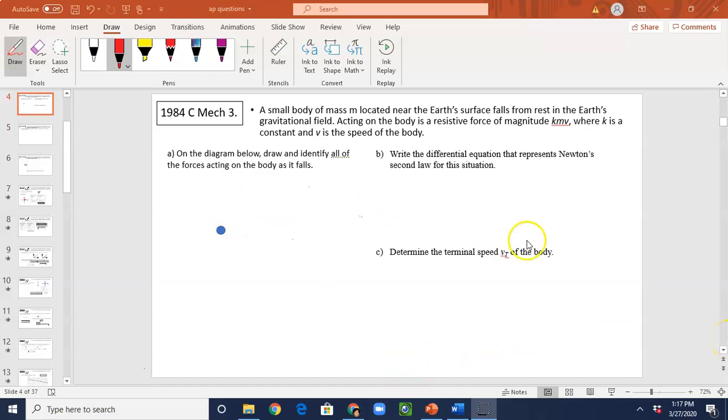Part A. On the diagram below, draw and identify all of the forces acting on the body as it falls. So we know when an object in air there's definitely gravity. Gravity is downward which is Mg.